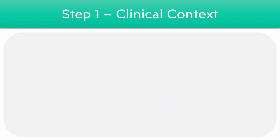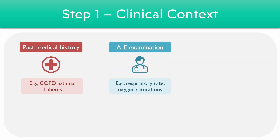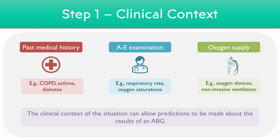The first step of arterial blood gas analysis involves looking at the clinical context of the situation. This includes factors such as the past medical history of the patient — whether they have any respiratory conditions or diabetes — a thorough A to E examination, looking at features such as the respiratory rate and cardiovascular status, and whether the patient is using any oxygen devices, such as a mask or ventilatory support. The clinical context of each situation can help to make predictions on the results of an ABG.